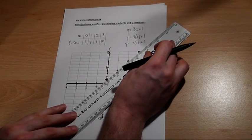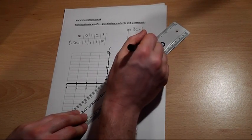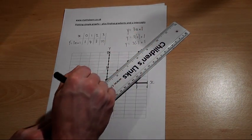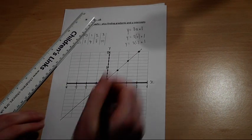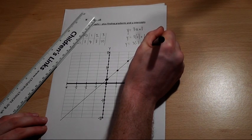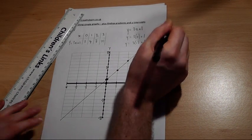So we get our ruler. Normally we would use a pencil here and just draw a line straight through those coordinates. y equals 3x plus 1.